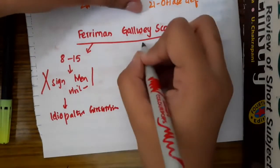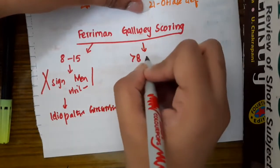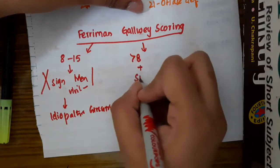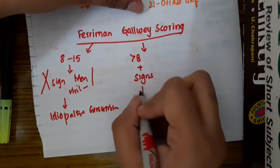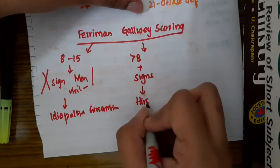If it is more than 8 with some signs, then it is normal hirsutism.